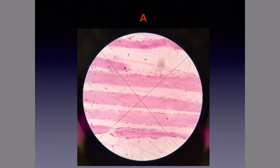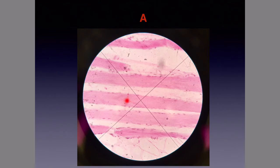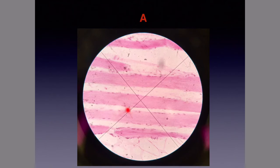Slide A. If you take a look at slide A here, you can see long fibers. They are multinucleated, and you can see some striated patterns in these long, thin, linear fibers, and so this would be skeletal muscle.